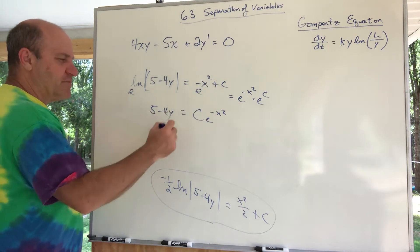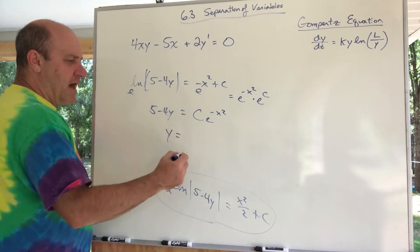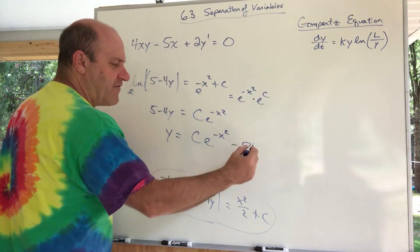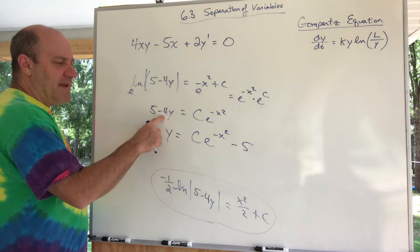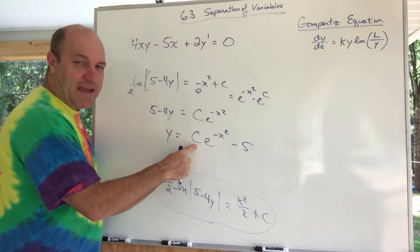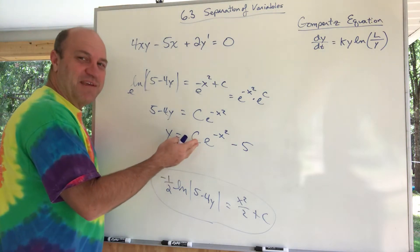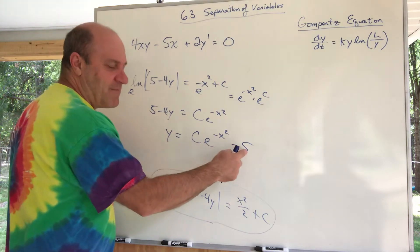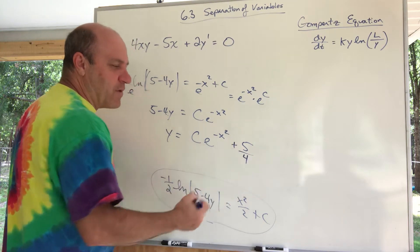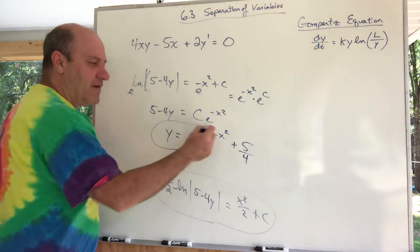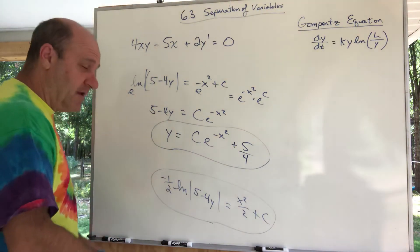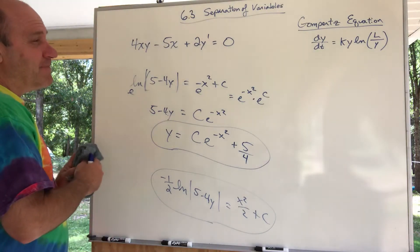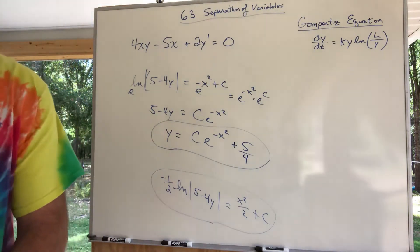Solving for y: subtract 5 and divide by negative 4. So I have C e to the negative x squared minus 5, divided by negative 4. When you divide C by negative 4, it just absorbs into a new C, and dividing negative 5 by negative 4 gives positive 5/4. So there's my explicit general solution, and there's my implicit general solution.